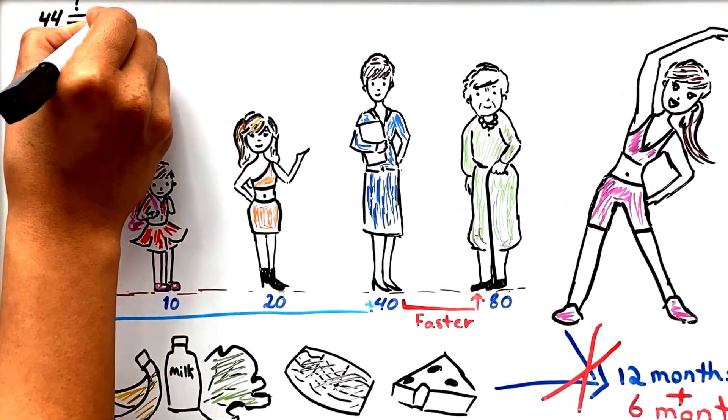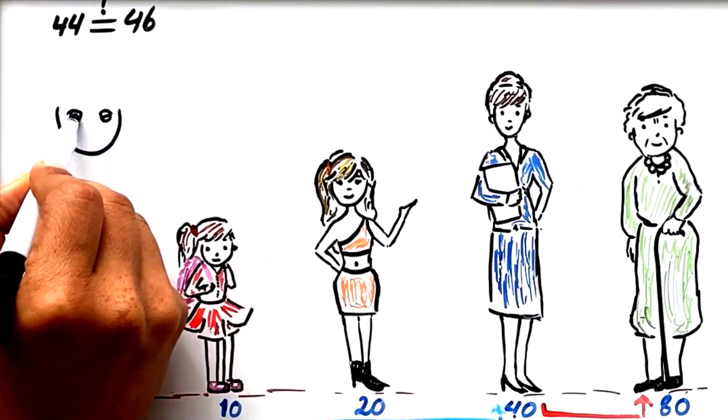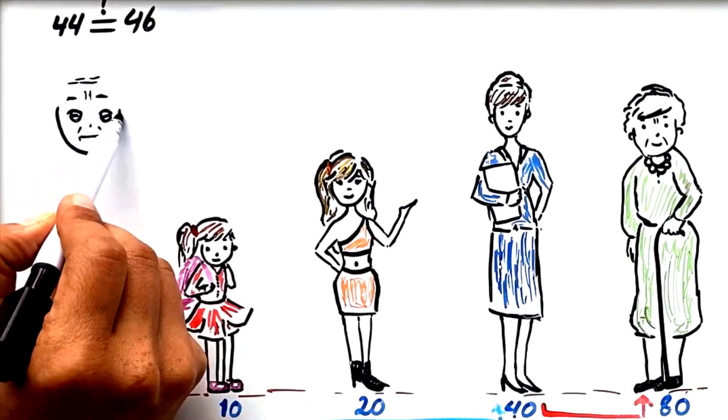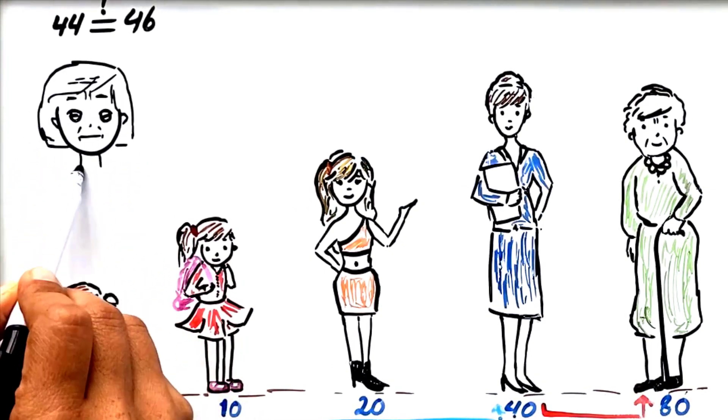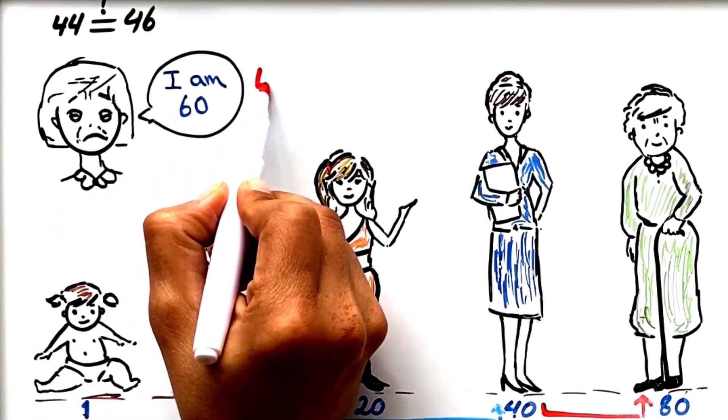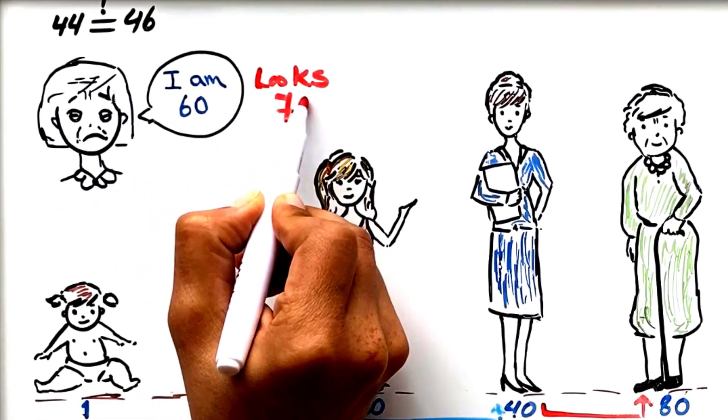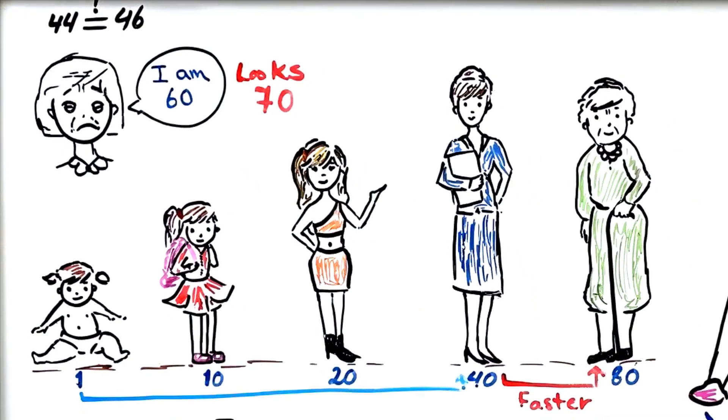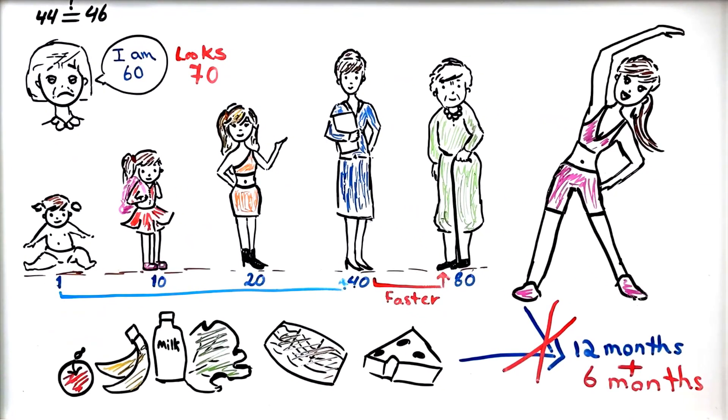If you are 40, that means by the time you hit 44, you will look and feel 46. And by the time you reach 60, you will look and feel 70. We see this every day. Just look around you.